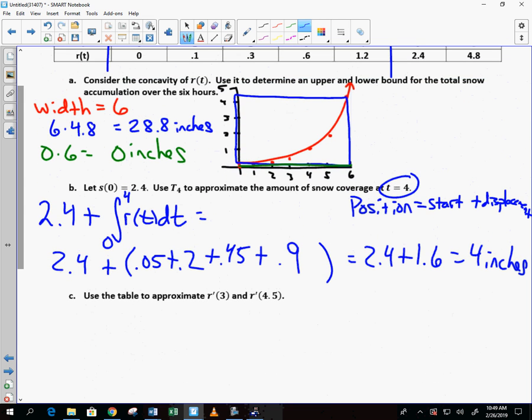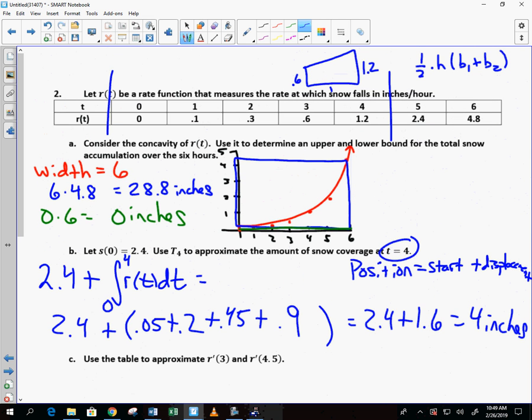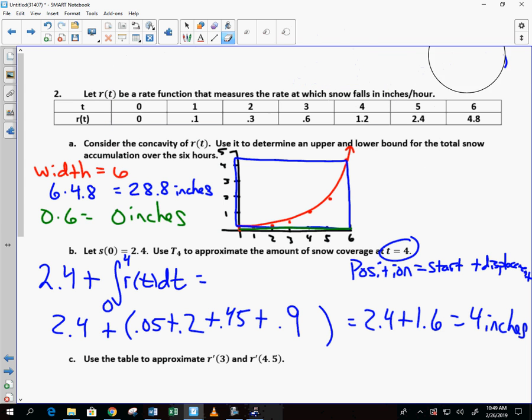Letter C, use the table to approximate r prime of 3 and r prime of 4.5. What does r prime mean? The derivative, right? And so we're looking at the derivative of the rate. So as you look at the graph here, is the rate speeding up or is the rate slowing down? The rate's speeding up, right? If the graph was like this, then the rate would be slowing down, wouldn't it? So the rate's speeding up. But we want to approximate that r prime of 3. We can't take the derivative of this, can we? Do you remember what we do to try to approximate r prime of 3?